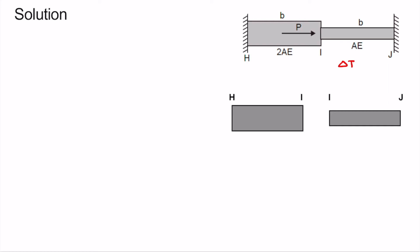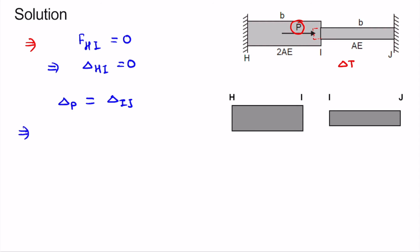Keeping these concepts in mind, let us find the solution. In our problem, the temperature of bar IJ is increased by delta T, causing some deformation. An external load P is applied such that the force in bar HI is zero, which implies the deformation of bar HI is also zero. This is only possible if the deformation due to external load P balances the thermal deformation of bar IJ. So we equate delta P — which is P times b divided by AE — to the thermal deformation, which is b times alpha times delta T.